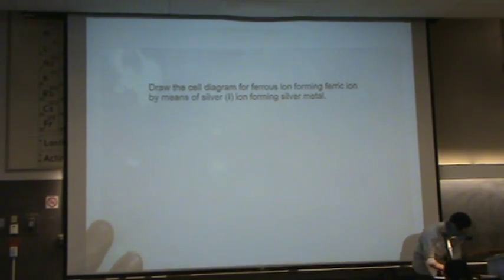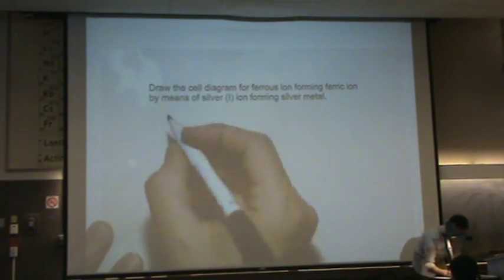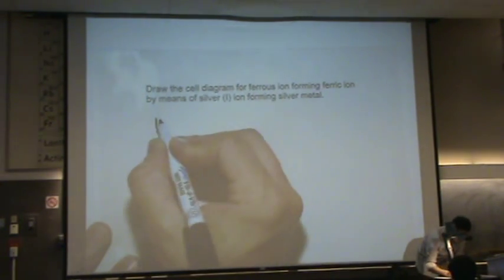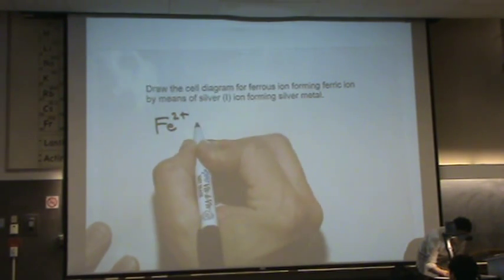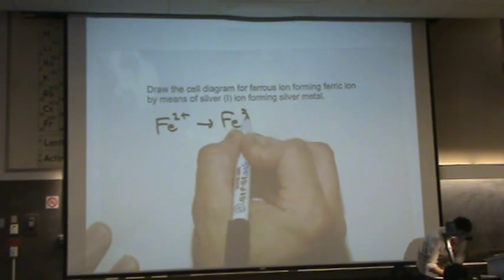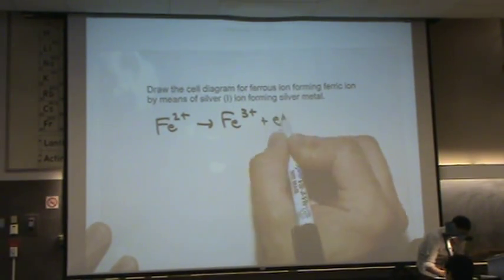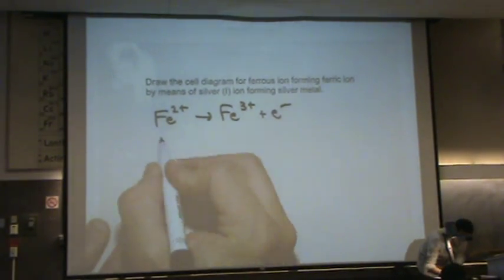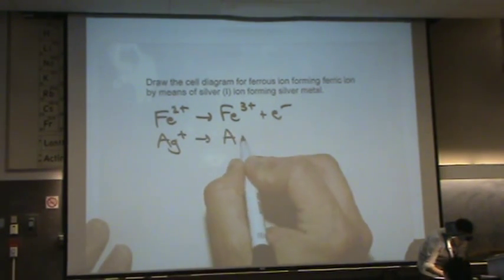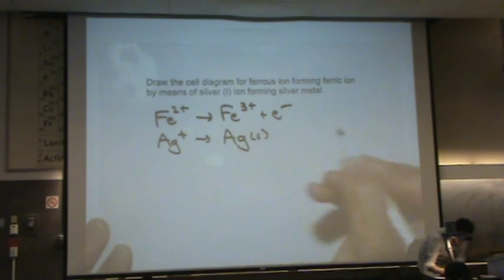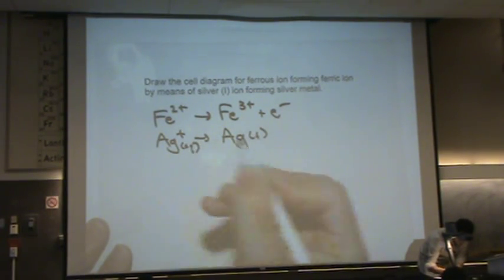So ferrous ions, what's the charge on that? Two plus, going to ferric, I've got to balance this, and I've got silver one, going to silver metal, this is aqueous.